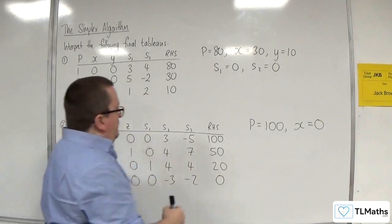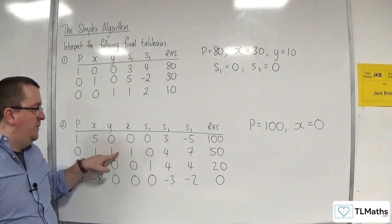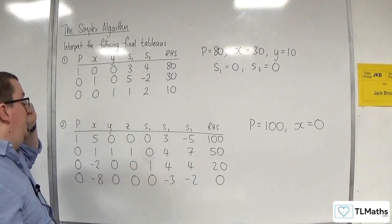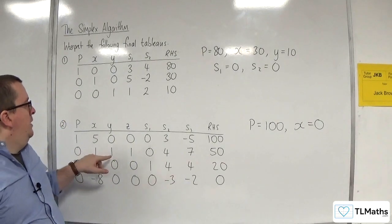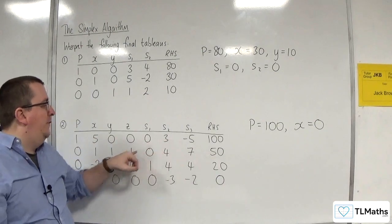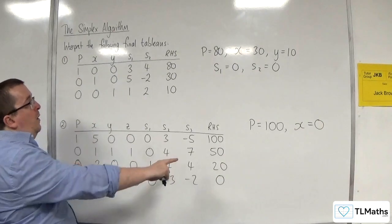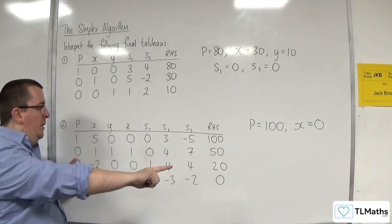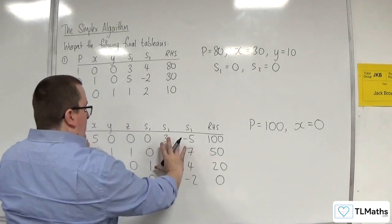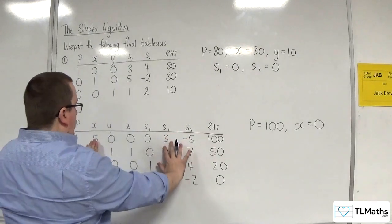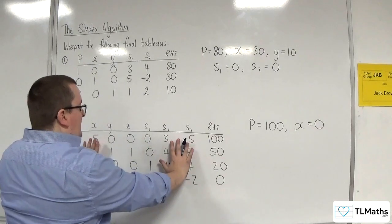Y is basic, and Z is basic as well. Now, notice how the 1s are in the same row. So this is an unusual occurrence, but you can't just say Y is 50 and Z is 50. Actually, because you're reading this off as one equation, or one line is one equation. So actually, what we're saying is that if X is 0, and S2 and S3 are going to be 0 because they're non-basic, you get left with Y plus Z is equal to 50.